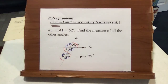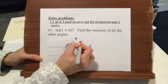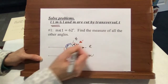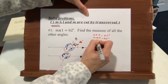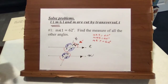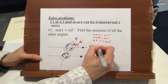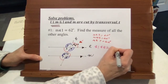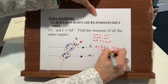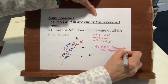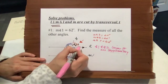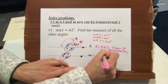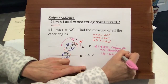This is how you mark up the figure. Because angle 1 is 62 degrees, we can now say the measure of angle 3 equals 62 degrees, the measure of angle 5 equals 62 degrees, and the measure of angle 7 equals 62 degrees. To get the others: angle 2 and angle 1 are a linear pair. Linear pairs of angles, by definition, are supplementary, which means they add up to 180. So we're going to say 180 minus 62, and that gives us 118.